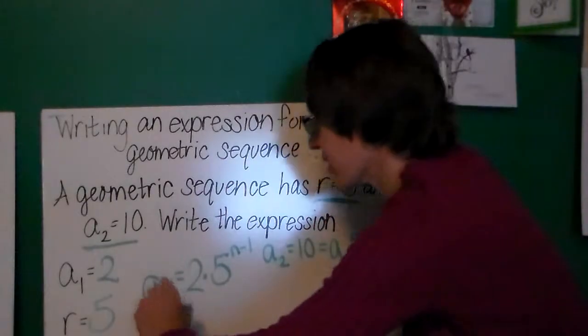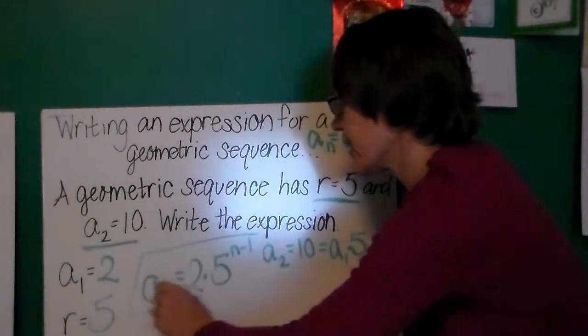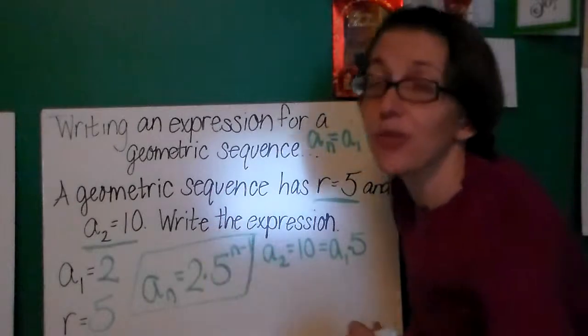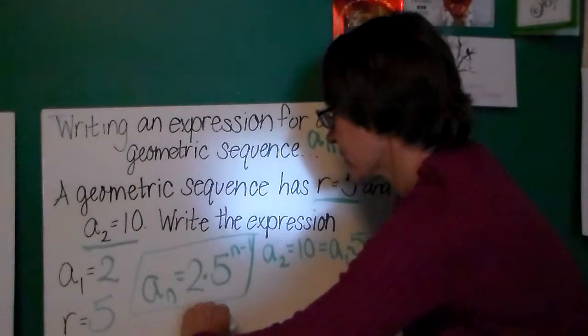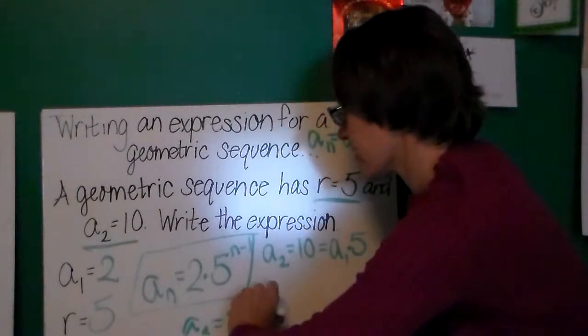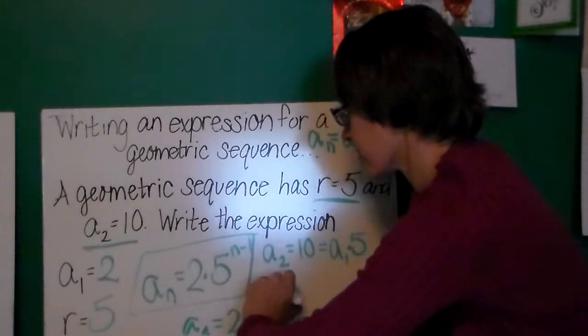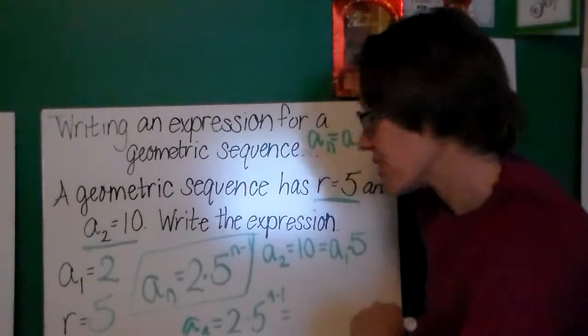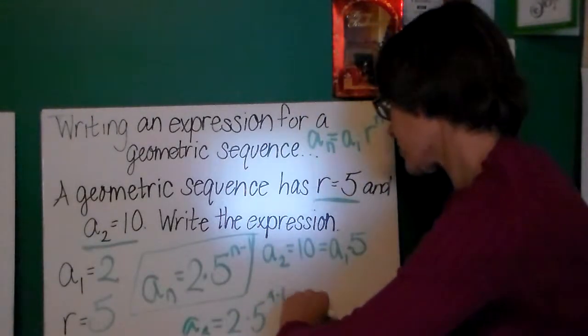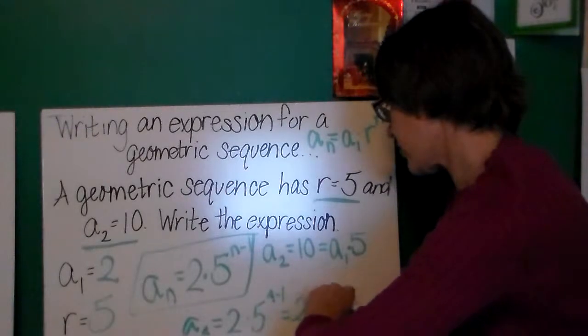For example, if I wanted to find a_4, a_4 would be 2 times 5 to the 4 minus 1 power. 5 to the 3rd is 125. So, overall, that would be 250.